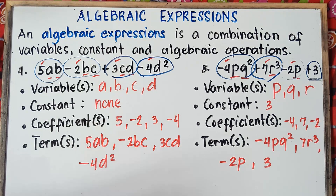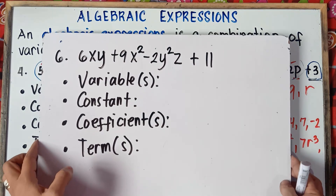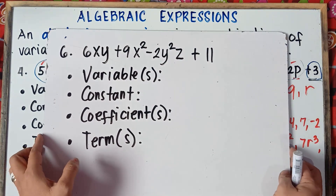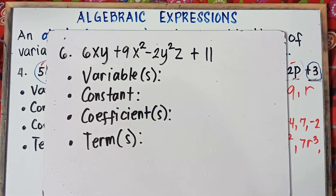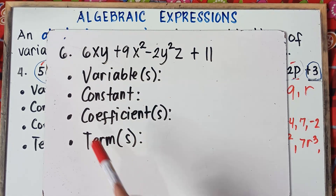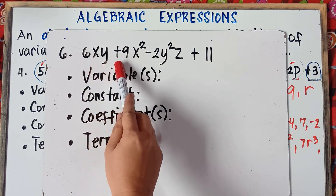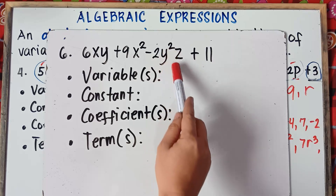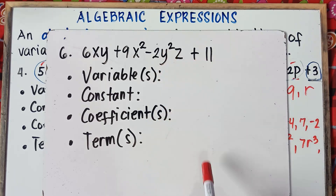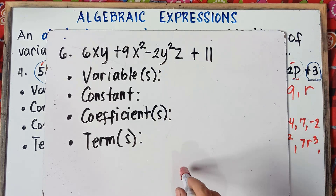So that's it, class. Now you try this one and put your answer in the comment section down below. Let me check if you really understand our topic. Number 6: given 6XY plus 9X squared minus 2Y squared Z plus 11.